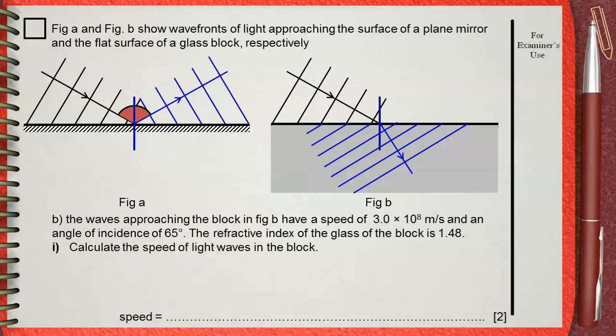Figure A and Figure B show wavefronts of light approaching the surface of a plane mirror and the flat surface of a glass block, respectively.